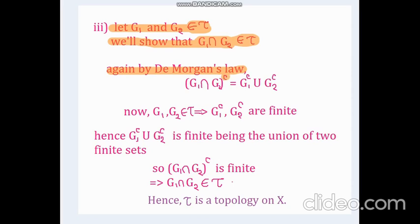Now, again by De Morgan's law, we can write complement of g_1 intersection g_2 equals the complement of g_1 union the complement of g_2. Now, since g_1 and g_2 belong to tau, this implies that complement of g_1 and complement of g_2 are finite, and so is their union, because of being union of two finite sets. So complement of g_1 intersection g_2 is finite, and therefore g_1 intersection g_2 belongs to tau. So tau is also closed under finite intersection. Thus, we can conclude that tau is indeed a topology on x.